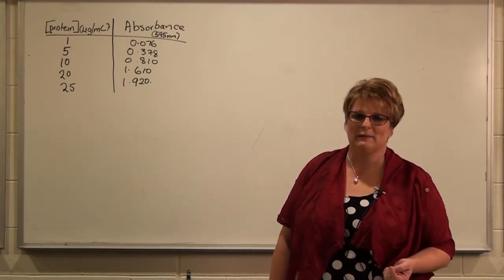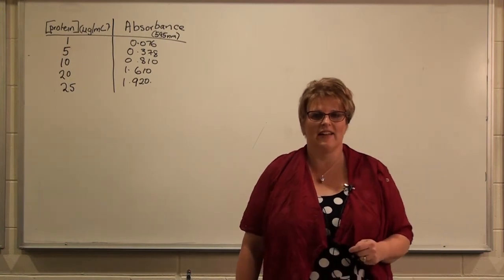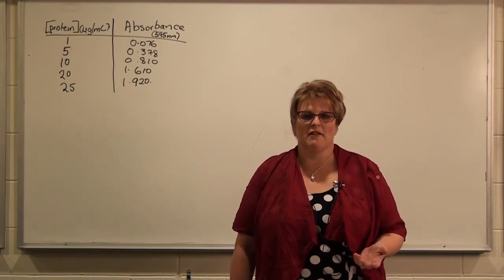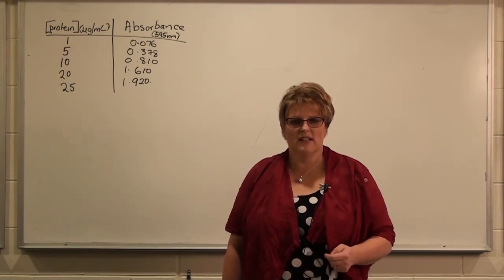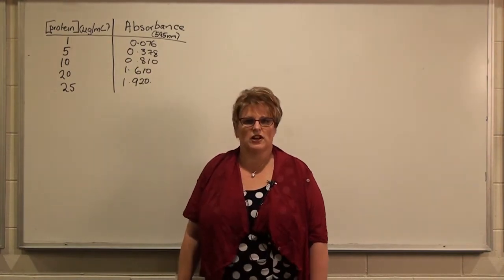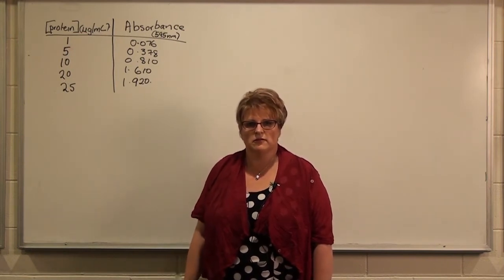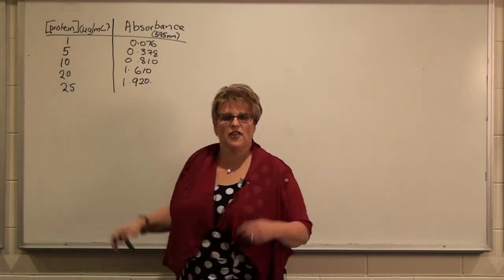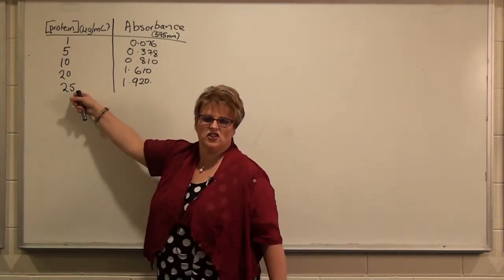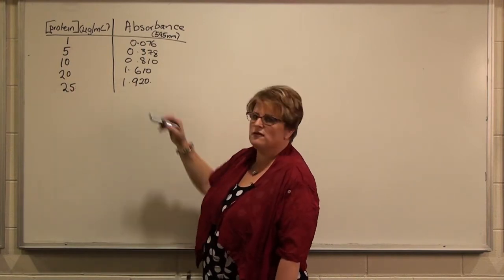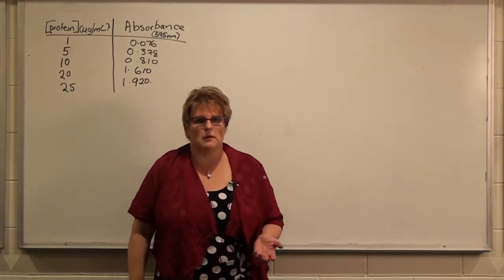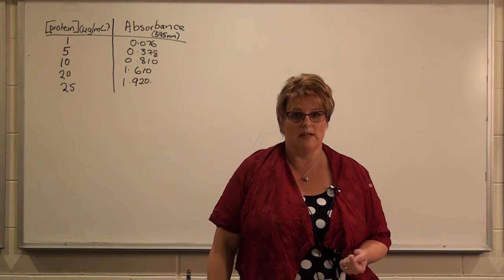Graphing is a very important skill in science. We often think about data in terms of a dependent variable and an independent variable. The independent variable is the thing you have control of in the experiment. For instance, when looking at the absorbance of a particular concentration of protein in a spectrophotometer, the scientist has chosen those values, so they become the independent variable. The dependent variable is the thing that changes as a consequence of what we decide upon.